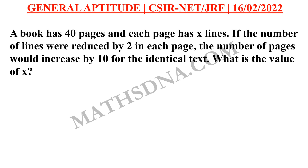The question is: a book has 40 pages and each page has X lines. If the number of lines were reduced by 2 in each page, the number of pages would increase by 10 for the identical text. What is the value of X? The options are: a) 7, b) 10, c) 20, and d) 30.